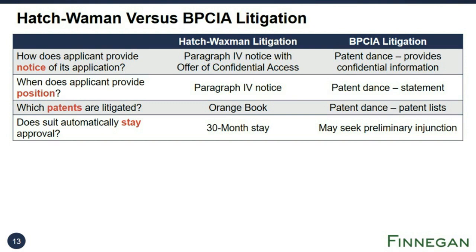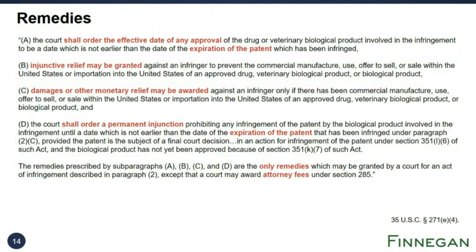Once the litigation starts, there are many similarities between Hatch-Waxman and BIPCA litigation, including with regard to proving infringement and defending against validity challenges. The available remedies are also similar. As provided in 271(e)(4), remedies include injunctions preventing the biologic or drug from being approved until the patent expires, damages if the product has been commercially manufactured, used, or sold, and possible attorney fees. As of last October, both Hatch-Waxman and BIPCA litigation require that settlements be reported to the FTC and the DOJ.